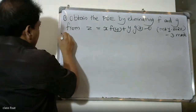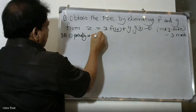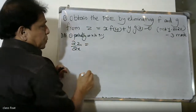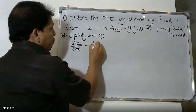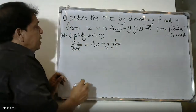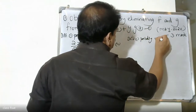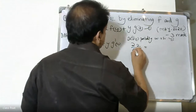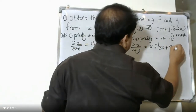Differentiating equation one partially with respect to x: dou z by dou x is equal to, on the right hand side, x into f of y differentiated gives f of y, plus y into g dash of x. Then differentiating partially with respect to y: dou z by dou y is equal to x into f dash y plus g of x into 1.